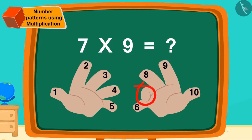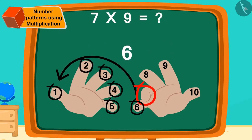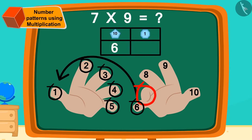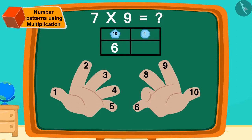Now, how many fingers are there on the left side of the bent finger? 6. In this way, we will write it in a tens digit place.